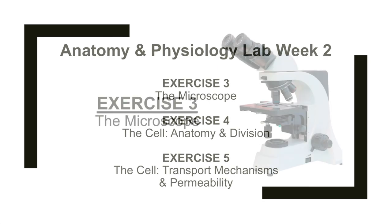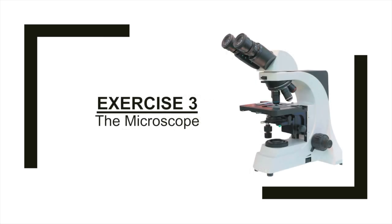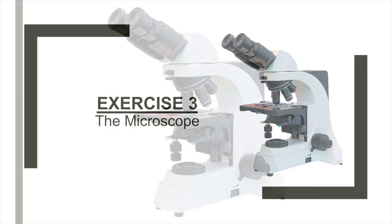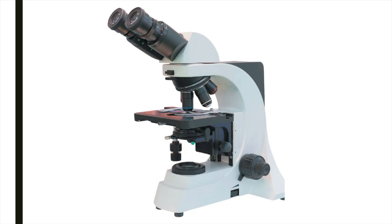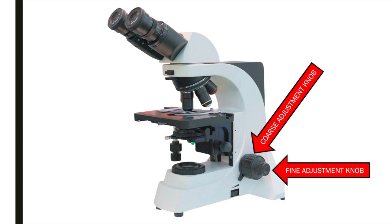In exercise three, we'll be familiarizing ourselves with the compound microscope. The compound microscope should always be handled with care. Before you begin using the microscope, make sure that the stage is lowered all the way and the scanning objective lens is in position. Always begin the focusing process on the scanning objective lens. Once you switch to low power, high power, or oil immersion, use the fine adjustment knob only.